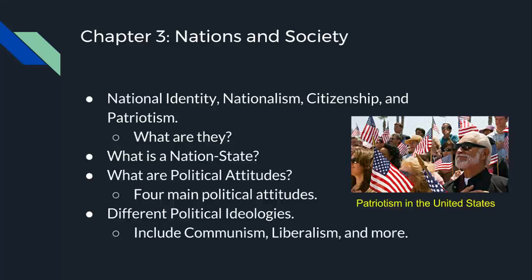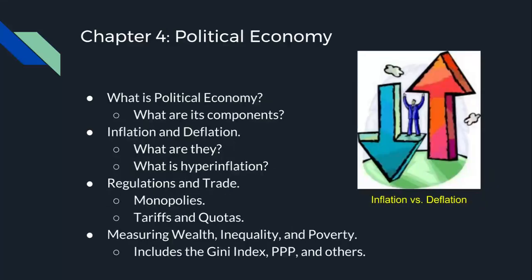Then we get into different political ideologies, focusing on three main ones. Liberalism favors a limited state role in society and economic activity. Communism emphasizes limited personal freedom and a strong state in order to achieve social equality. And social democracy supports private property and markets, but believes the state has a strong role to play in regulating the economy and providing benefits to the public. That's it for Chapter 3.